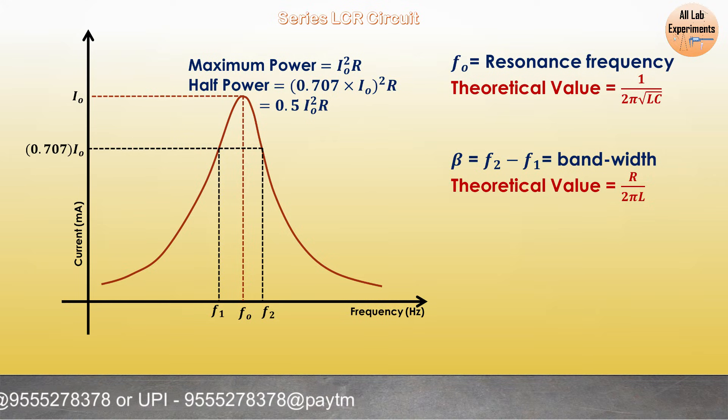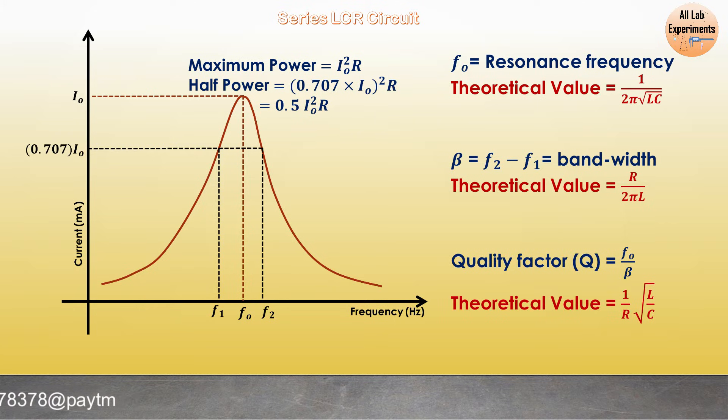Similarly we can define quality factor, which is f₀ by β. We know the value of resonance frequency, we also know the value of bandwidth, we can take a ratio of them and also calculate its value theoretically. When we have calculated these three values experimentally and theoretically, we can calculate the percentage error as well.